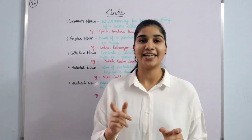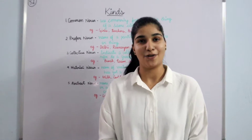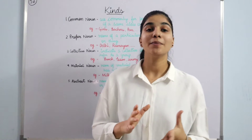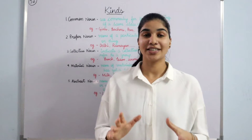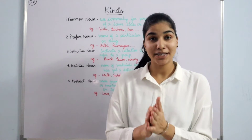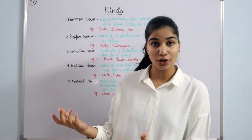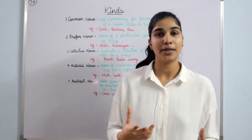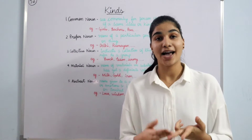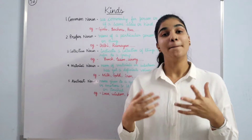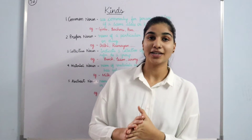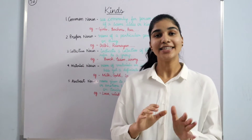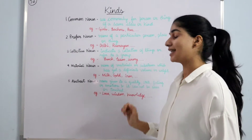Next we have material noun — the name of a material or thing which has a particular or definite volume or weight. For example, gold, iron, milk — these all come under material noun. And the last one we have is abstract noun.